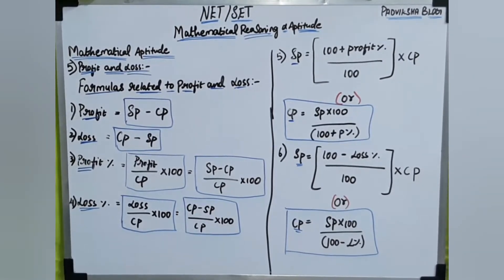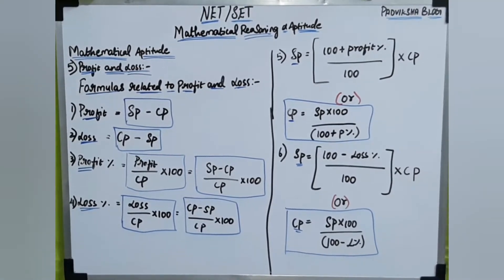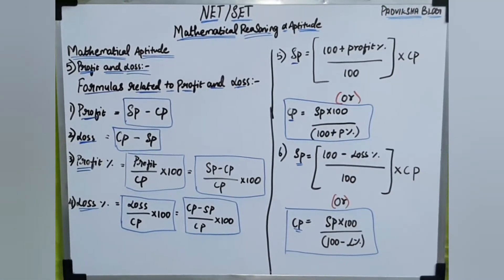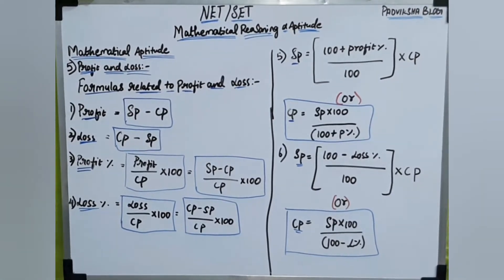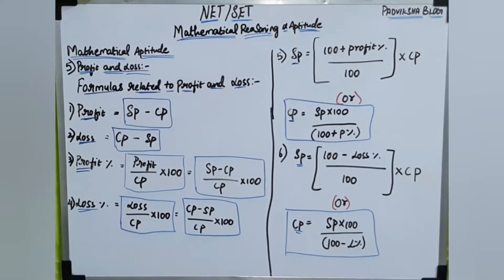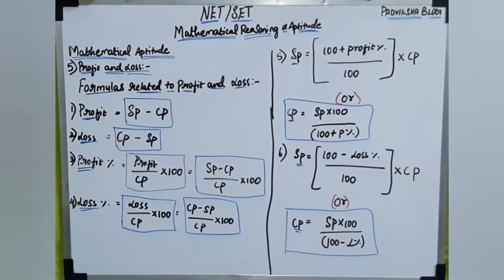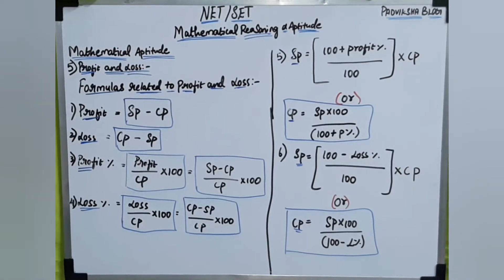Next formula: cost price is equal to selling price into 100, divided by 100 plus profit percentage. We also have the formula where 100 plus profit percentage relates selling price and cost price — using profit divided by selling price into 100 to find cost price. This gives us another way to calculate cost price from the selling price and profit percentage.